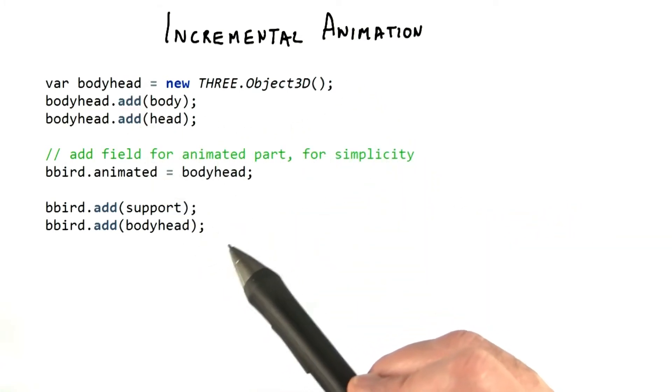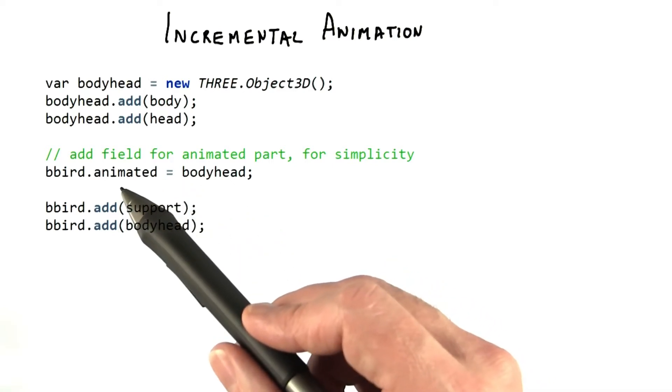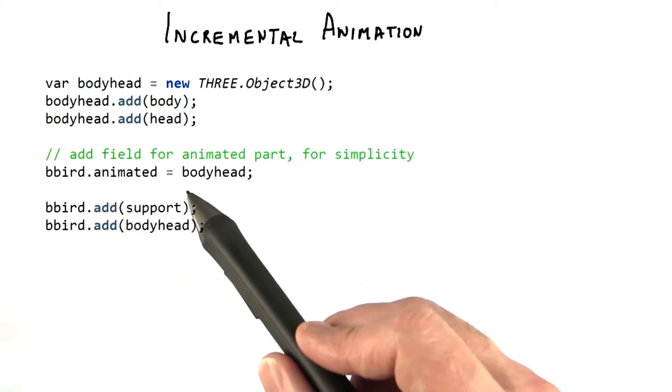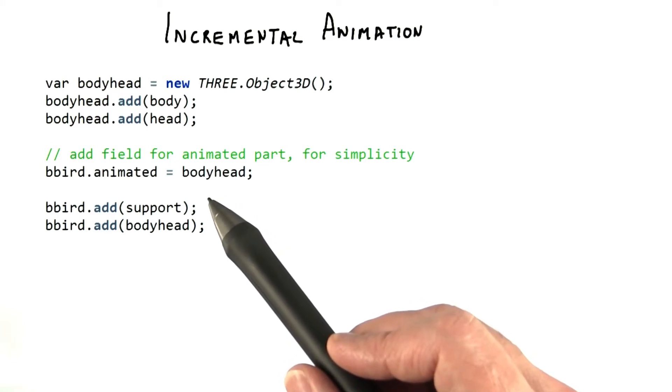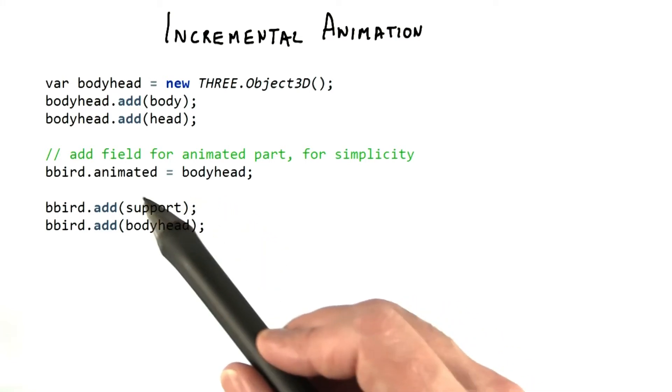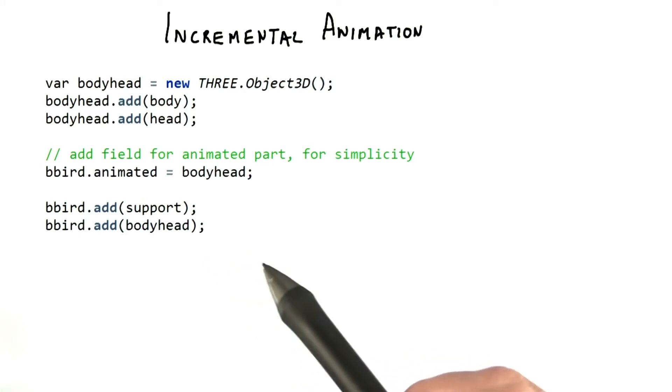Next, I do a thing that JavaScript allows. I create a new parameter for the bird called animated, which I set to bodyhead. In this case, I want to access the animated part of the bird in the render function. So for convenience, I give it a separate parameter. Adding parameters at any time to an object is a feature of JavaScript.